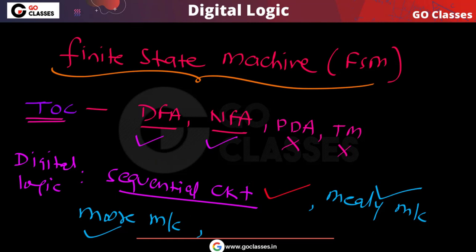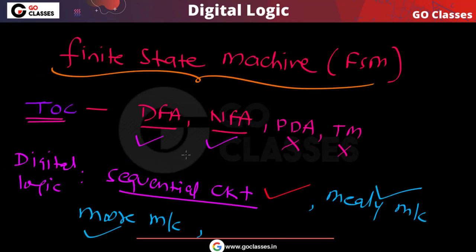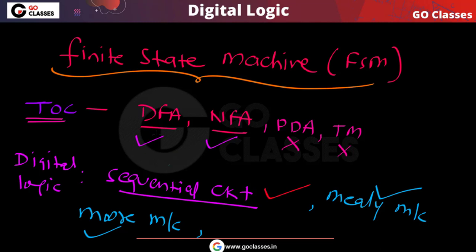There are many other finite state machines, for example the Markov model. To summarize: anything with finite number of states and no additional memory is a finite state machine. In theory of computation, DFA and NFA are finite state machines. In digital logic, sequential circuit is a finite state machine because with n flip-flops you have 2^n possible states.